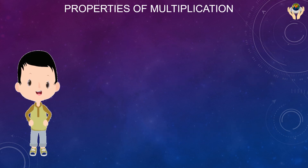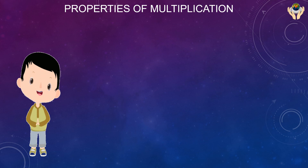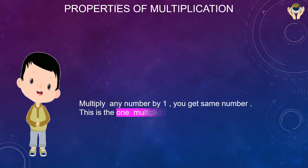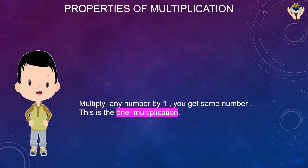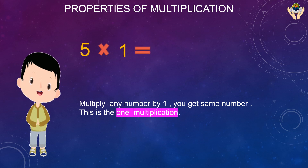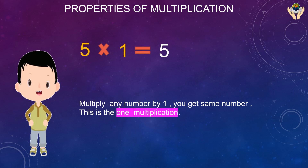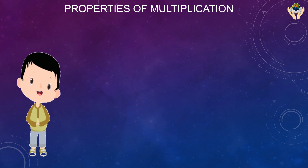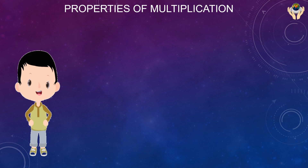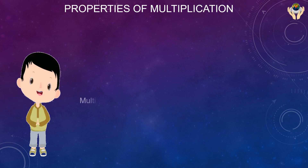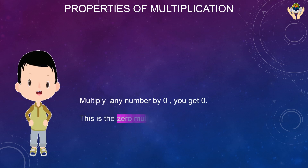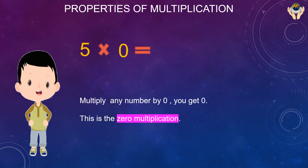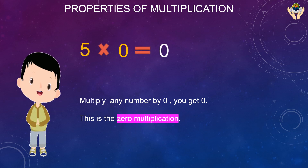Now we are going to see the one property: multiply any number by one and you will get the same number. Next is the zero multiplication property: multiply any number by zero and you will get zero. For example, five multiplied by zero equals zero.